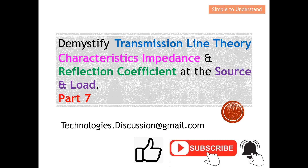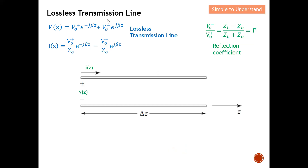This is what I discussed in the Part 6 series. If you've forgotten how I obtained these equations, you can always refer back to Part 6. All the transmission line theory discussions are related and linked, so I strongly suggest starting from Part 1. In Part 6, I derived this set of equations which represent a lossless transmission line.